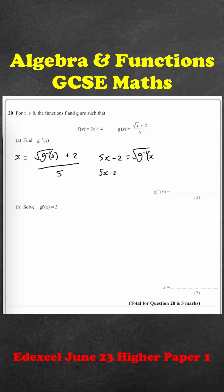Square both sides so we get (5x - 2)² equals g⁻¹(x). So for part B, we have to solve g(f(x)) equals 3.